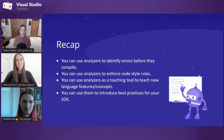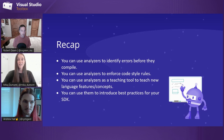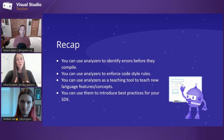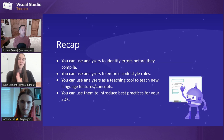Just a quick recap of what you can do with analyzers: you can use analyzers to identify errors before they compile — notice I didn't have to run a build, it's reporting violations for me in the background. You can use analyzers to enforce code style rules, use them as a teaching tool to teach new language features and concepts, and use them to introduce best practices for your SDK. As a library author, you might see people keep running into the same problem — you can prevent that by writing an analyzer with a squiggle and a code fix.